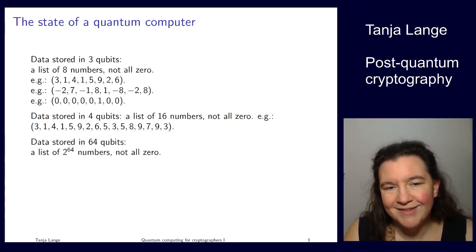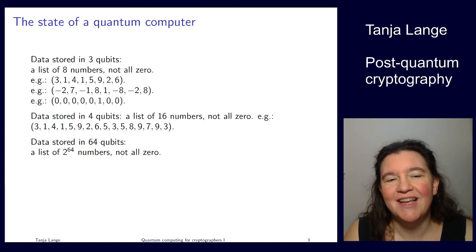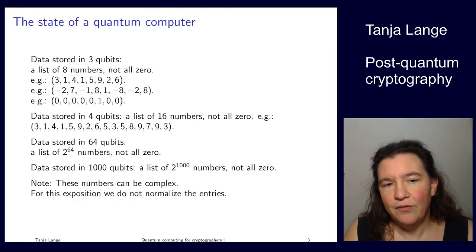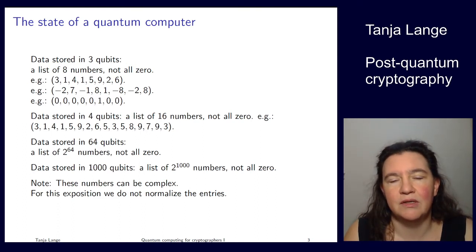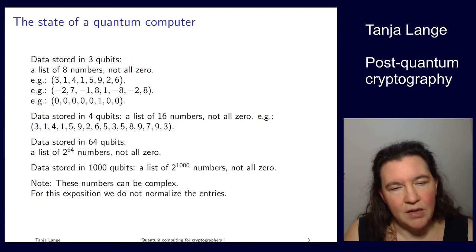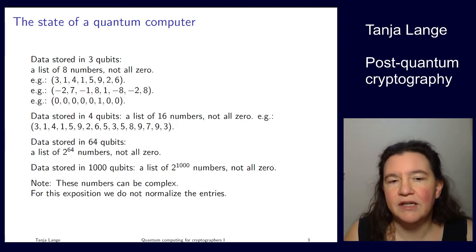If you have 64 qubits, you certainly can't write this down here because that is a list of 2 to the 64 numbers. The only requirement is that not all of them are 0. For much larger numbers, if you are thinking of 1000 qubits, if I wanted to represent this on our current computers, I would need a list of 2 to the power of 1000 numbers. These numbers can be complex. I already gave examples of negative numbers.